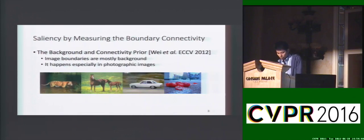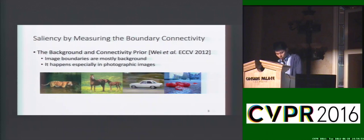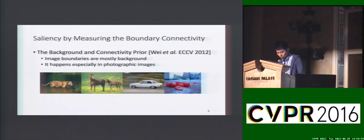Recently, many state-of-the-art approaches employ the background prior to detect salient objects. This prior states that image boundaries are mostly background, and this happens especially in photographic images where photographers tend to locate important objects near the center of the image. So we can measure the saliency of a pixel by its connectivity to the image borders.